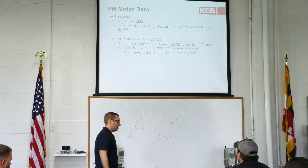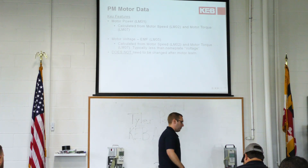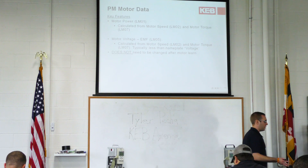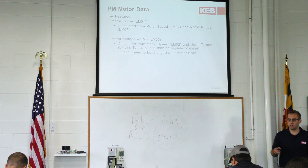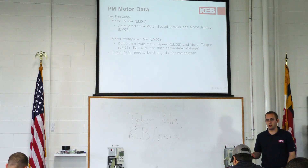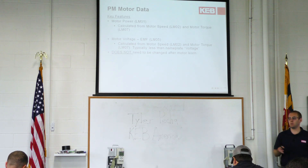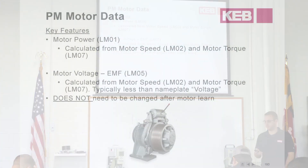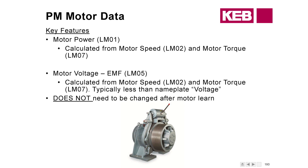Between the induction and permanent magnet configurations, there are different parameters to enter into the motor data. For induction, you enter horsepower; for permanent magnet, you enter torque. On permanent magnet machines, the motor voltage will be calculated a little bit lower after the auto-tune, because the drive is calculating a back EMF voltage. There's no need to go back in and change that after auto-tune.